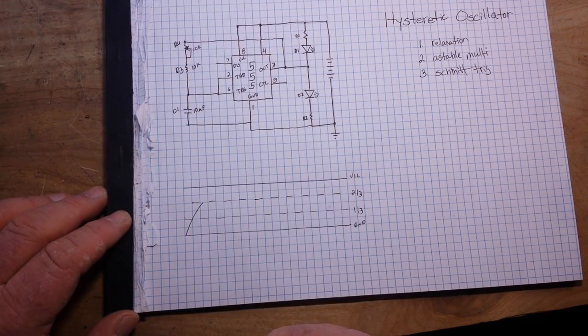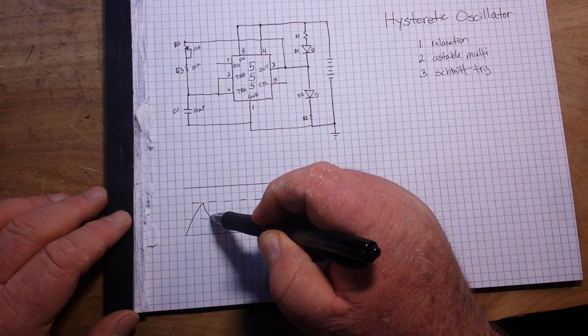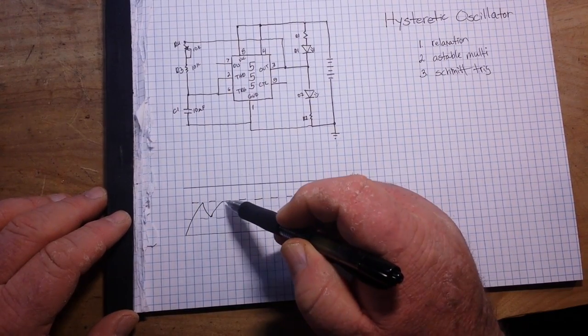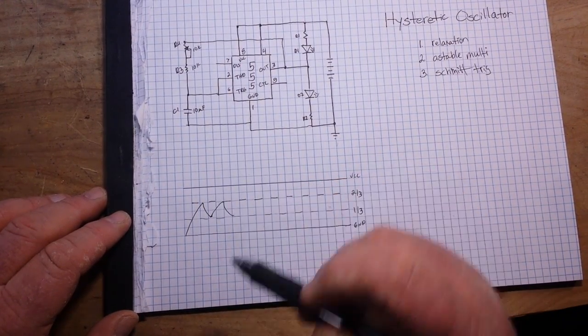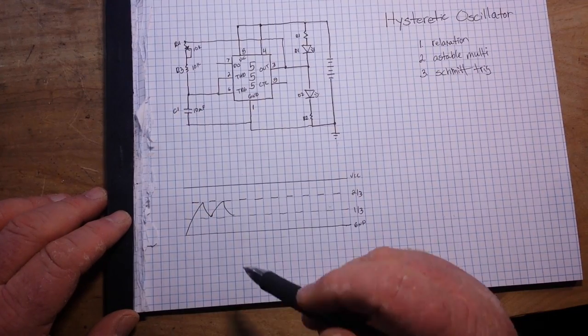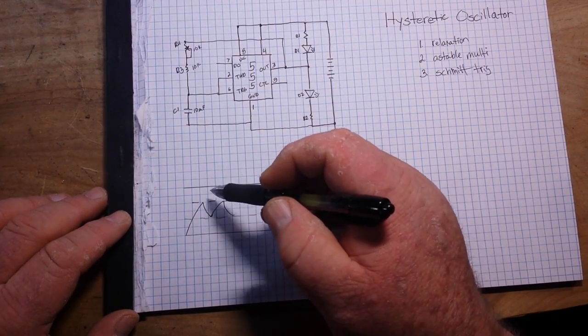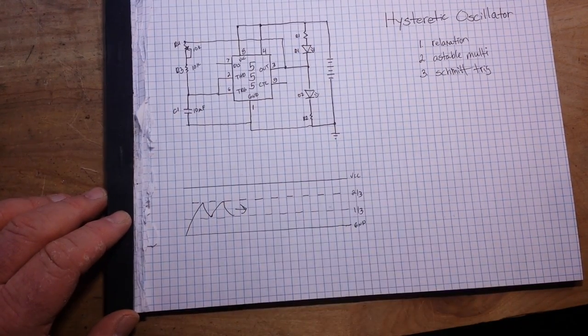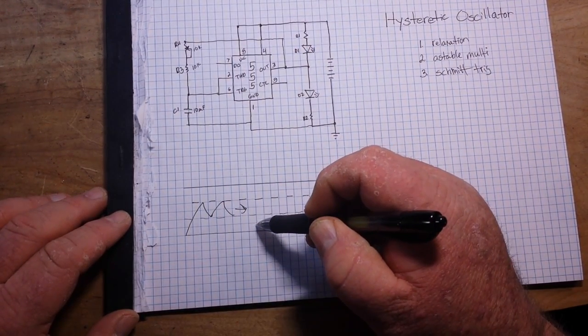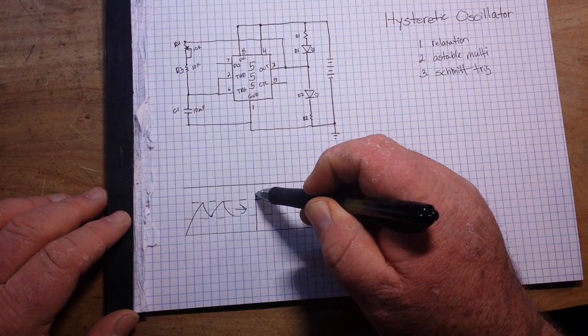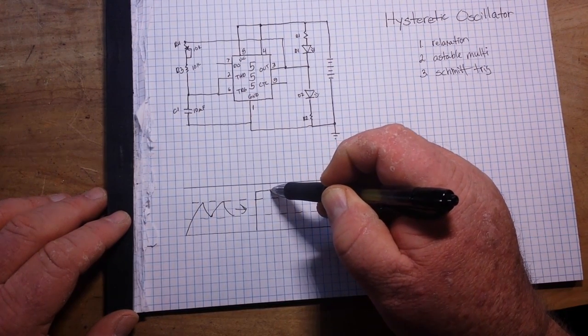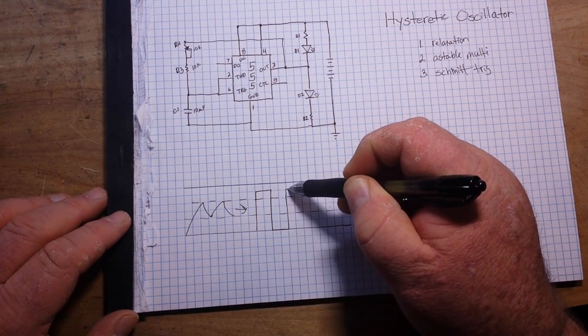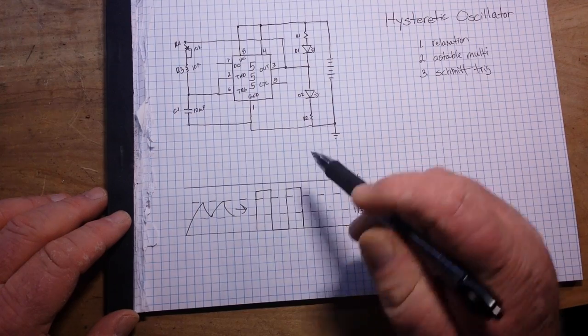So when our capacitor charges, it's going to reach that two-thirds point, discharge down to one-third, charge back up to two-thirds, discharge down to one-third, like that. So what we have here is all this dead zone, and then through the magic of our Schmitt trigger...